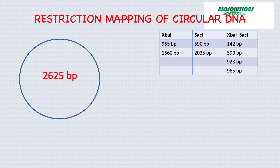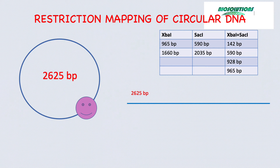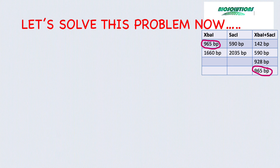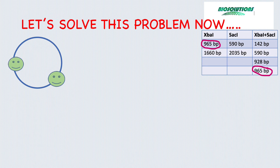Restriction mapping for a circular DNA is slightly different from that of a linear DNA. Here, one cut linearizes the molecule; two cuts will produce two fragments; three cuts will produce three fragments, and so on. Keeping this in mind, let's solve this problem. Both XBA1 and SAC1 produce two fragments, hence they both cut this DNA twice. We can begin with any one.